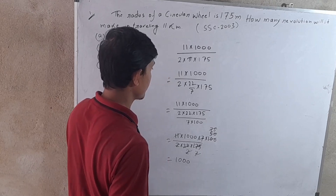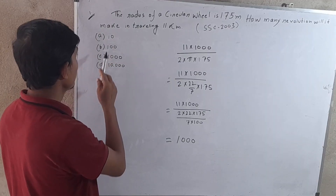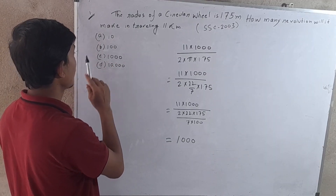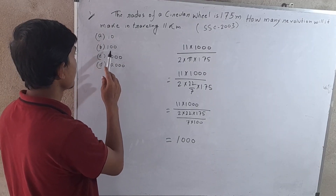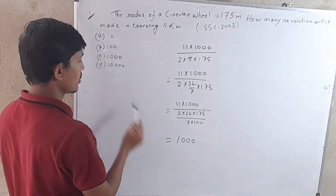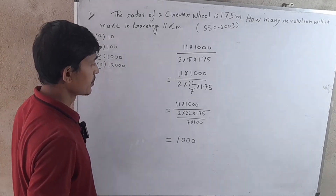The answer is 1000. The options are: Option A: 10, Option B: 1000, Option C: 1100. The correct answer is 1000.